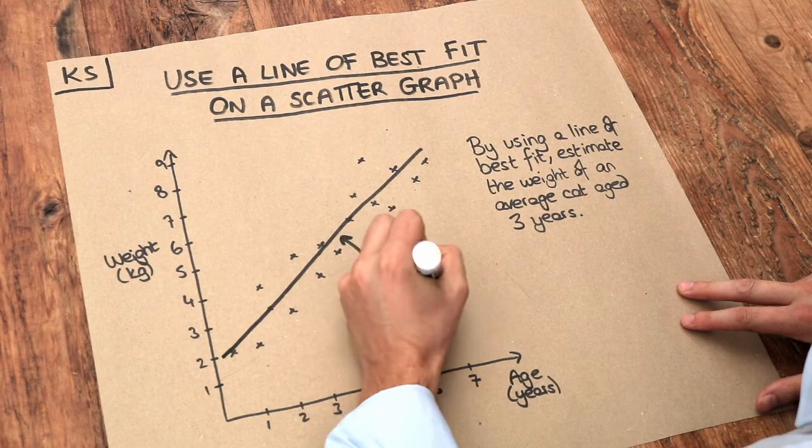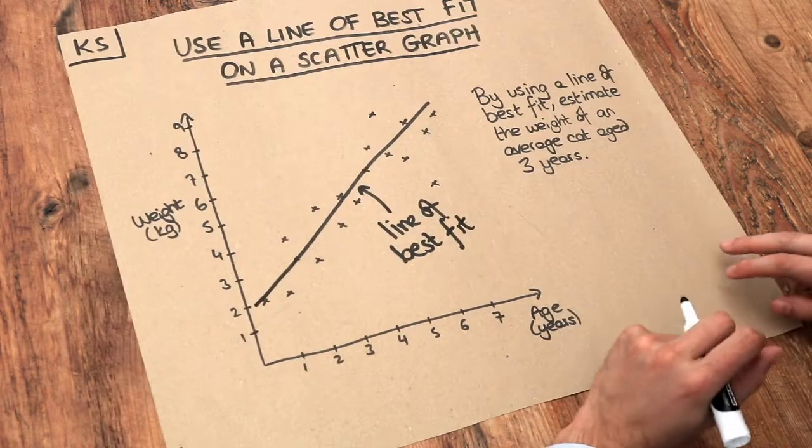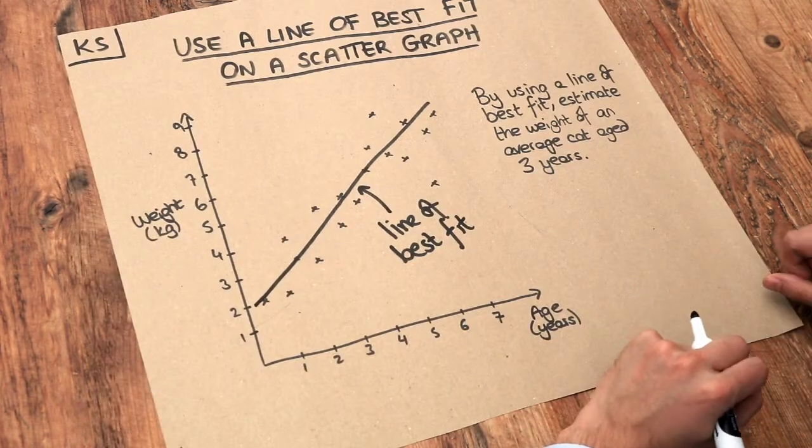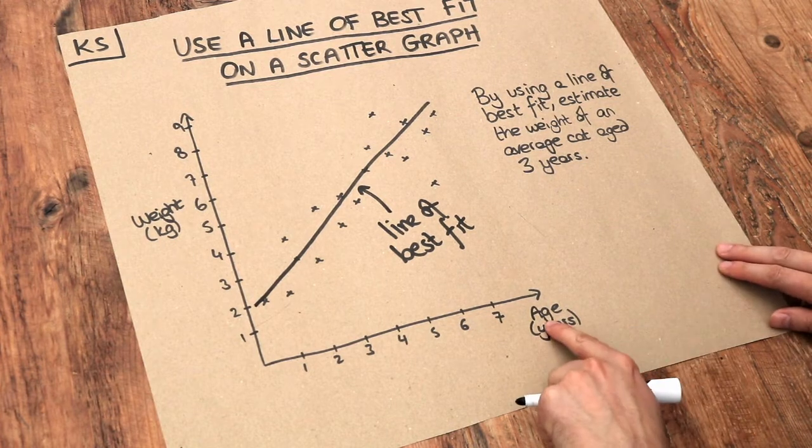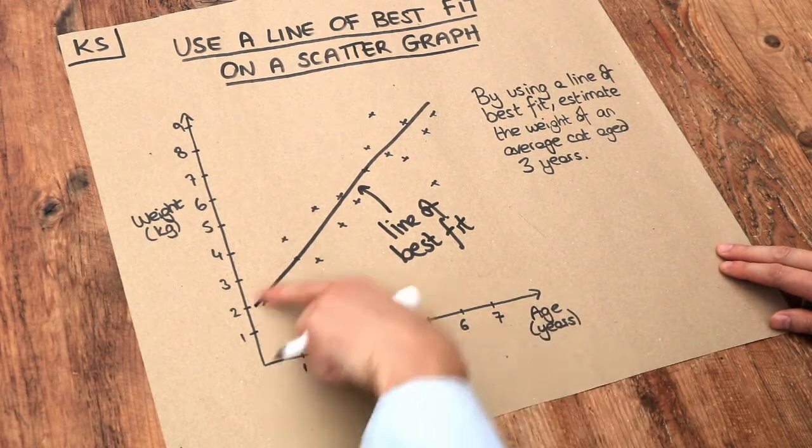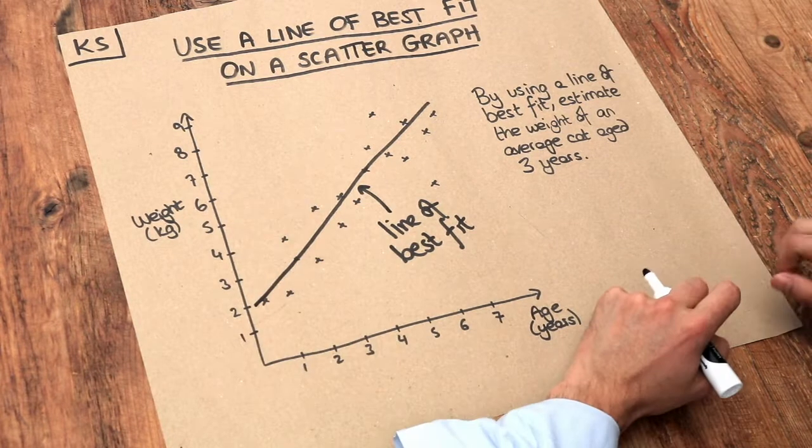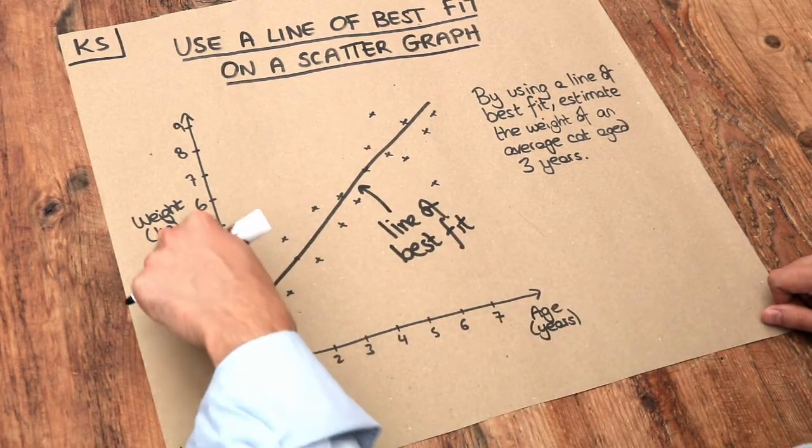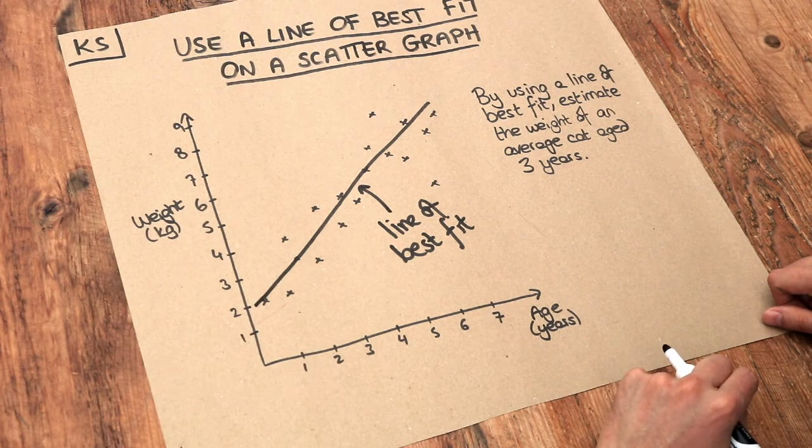Now the good thing about a line of best fit is it allows us to make predictions for other values. So for example, if we had the age of a particular cat, we could use this line of best fit to estimate the weight of that cat. And similarly, if we had a weight of a cat, we could use the line of best fit to estimate the age of the cat.